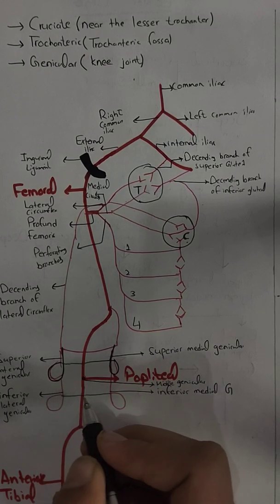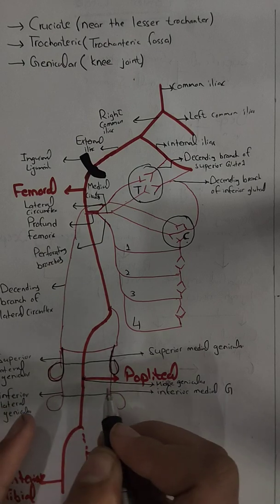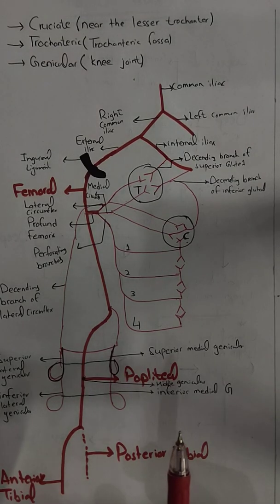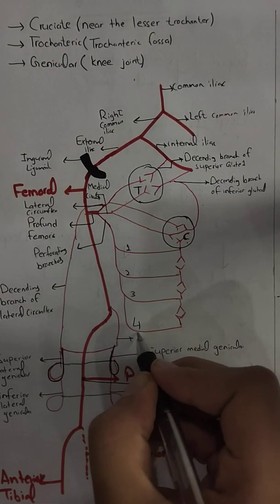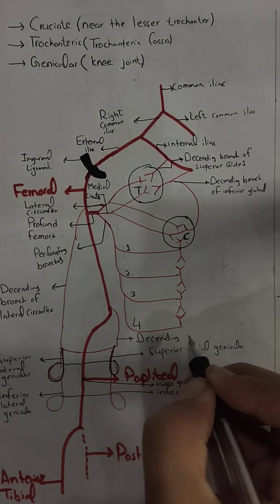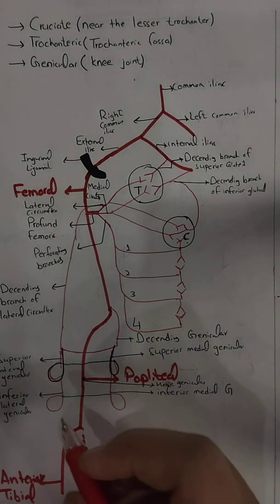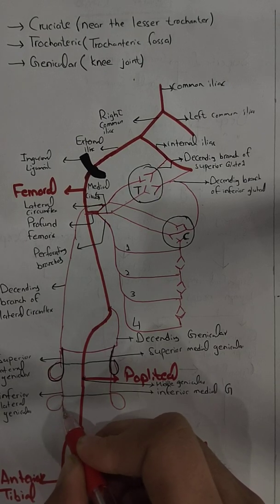The genicular branches shown in green are coming from the posterior side, while those shown in red have come to the anterior side. Five branches come from the popliteal artery and three are additional. The first additional branch is the descending branch of the lateral circumflex femoral artery, the second is the descending genicular from the femoral artery, and the third is the anterior tibial recurrent — a branch given off by the anterior tibial artery.